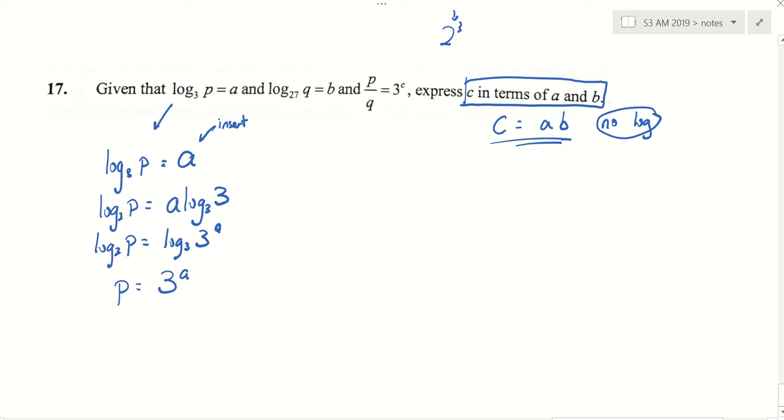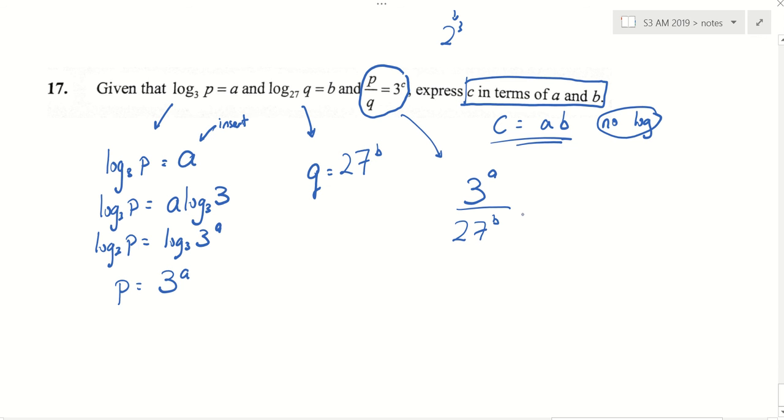Then, from this one, maybe I pause and let you try while I answer. 3 to the power of a over 27 to the power of b is equal to 3 to the power of c.